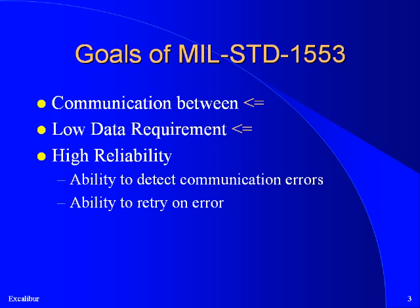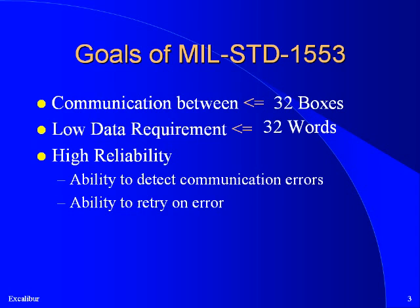The designers of 1553 wanted to deal with the need for up to 32 devices on an aircraft to communicate with each other. The assumption was made that most data needed for transfer on an aircraft is short and can be fitted into a message of 32 16-bit words. A central requirement for the specification was the ability to detect errors so that data could be resent if necessary and the pilot could be informed if any devices were malfunctioning.